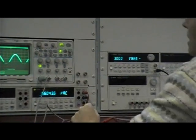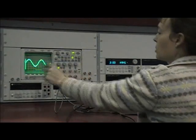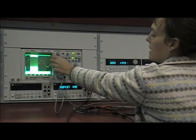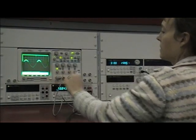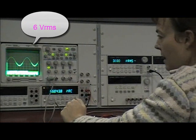And when you do this, when you measure the RMS value of the waveform, we see that the RMS value of the waveform as measured by the scope agrees with the DMM, which is 6 volts RMS.